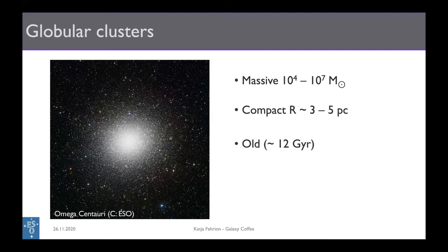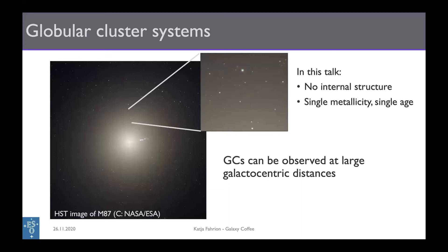In the Milky Way we can get these beautiful pictures, as you see on the left-hand side, and we can study the internal workings of these globular clusters by analyzing individual stars. But the globular clusters I will be talking about don't look like this — they are at higher distances and appear as barely resolved point sources even with the HST.